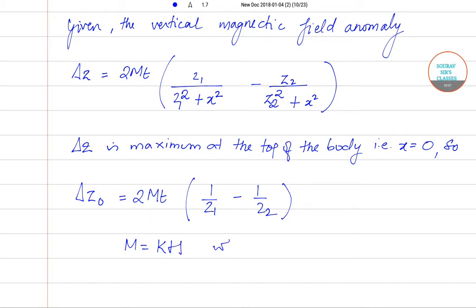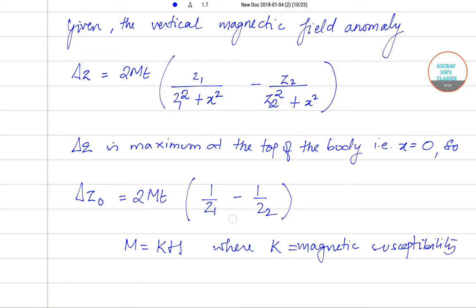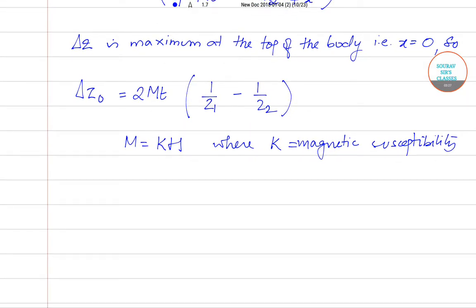Now it is given to us some information with regard to certain values. K is 0.5, H is given to be 60,000 nT. Then M becomes, so let us find M using this formula. It is 0.5 into 60,000 nT, so this becomes 30,000 nT.